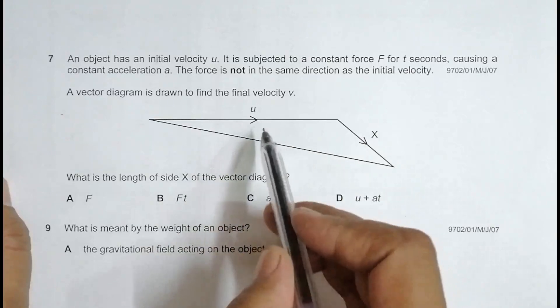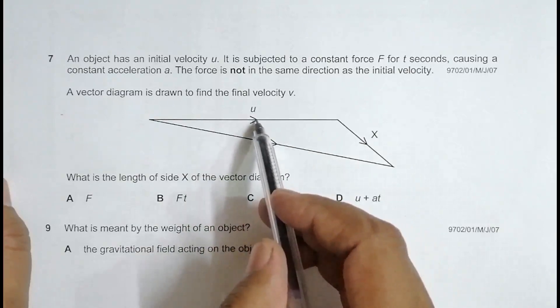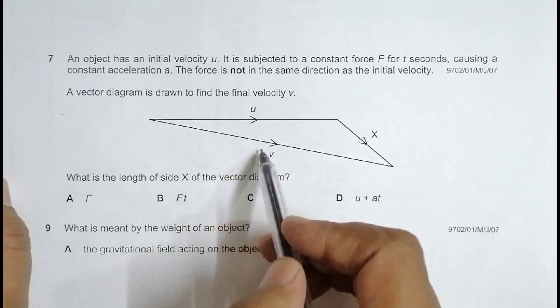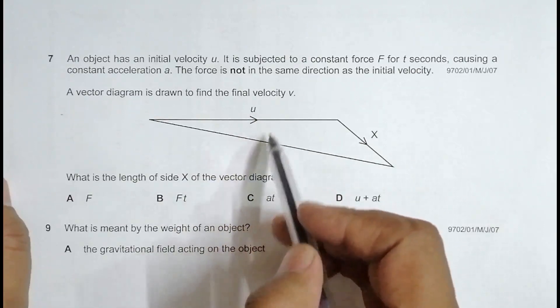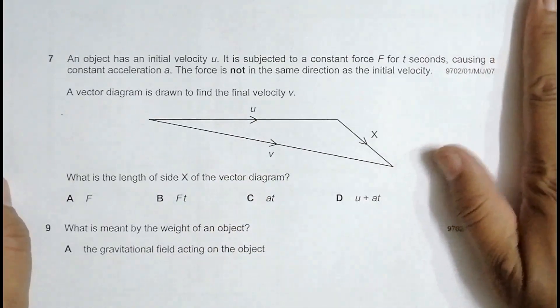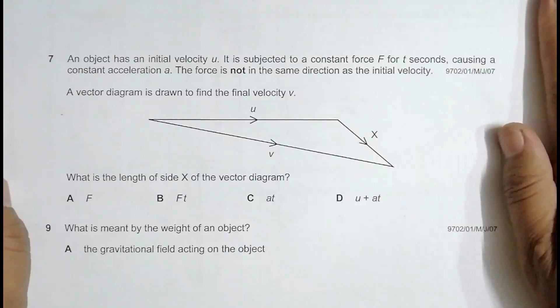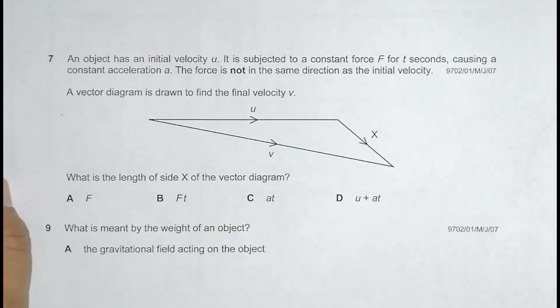So it is shown by the fact that we have got initial velocity U, and this is V, and they are in different directions, they are forming certain angles, so that means that the force there is not in the direction of the initial velocity.